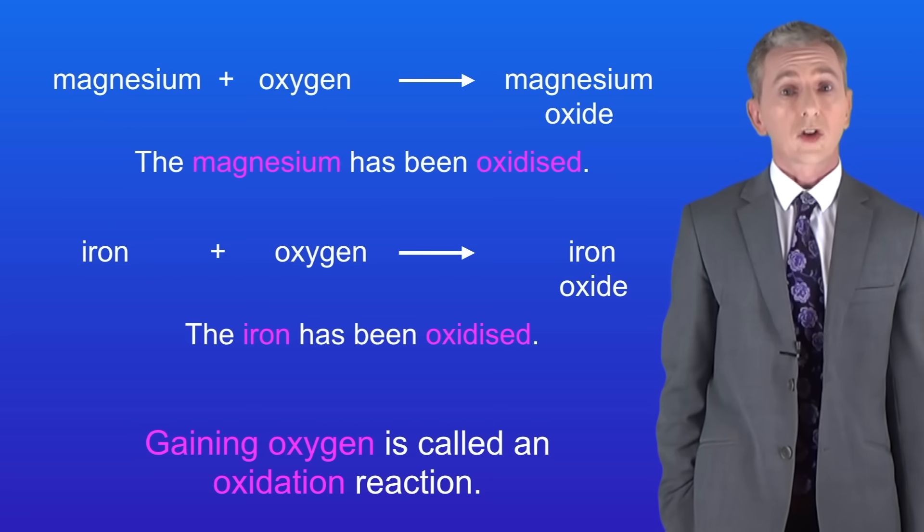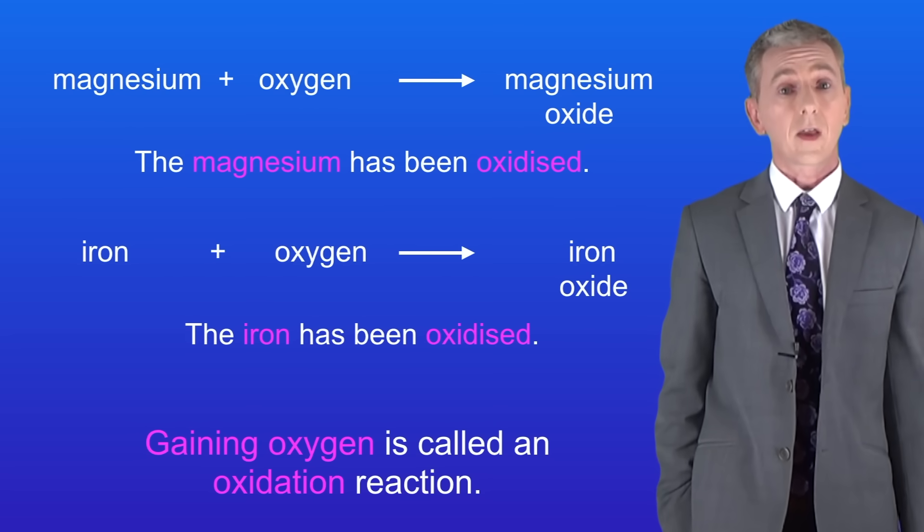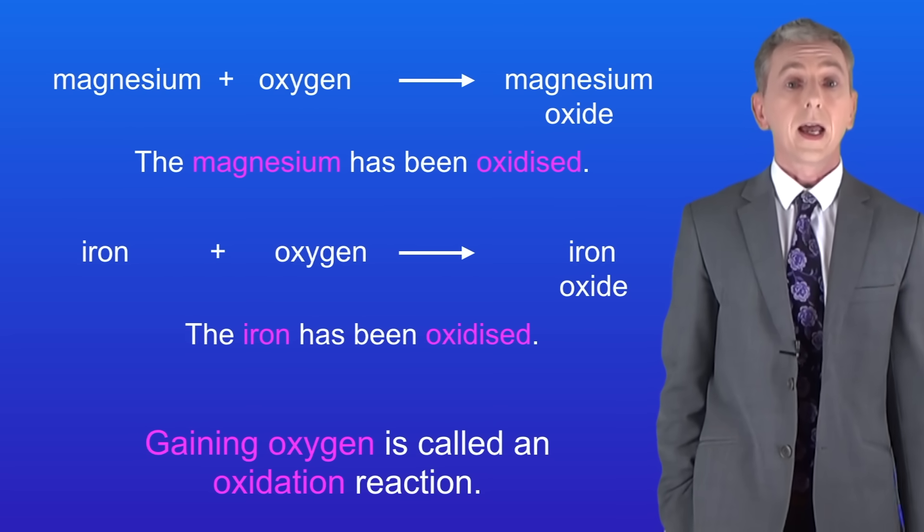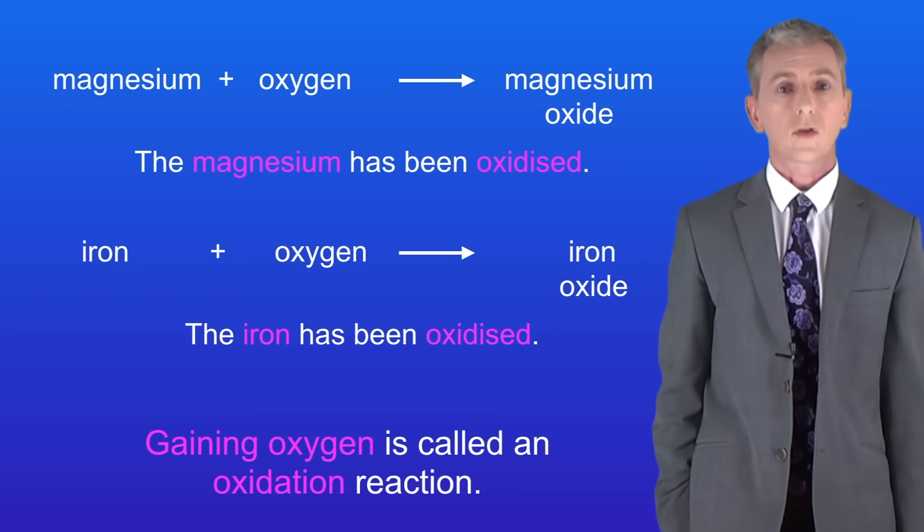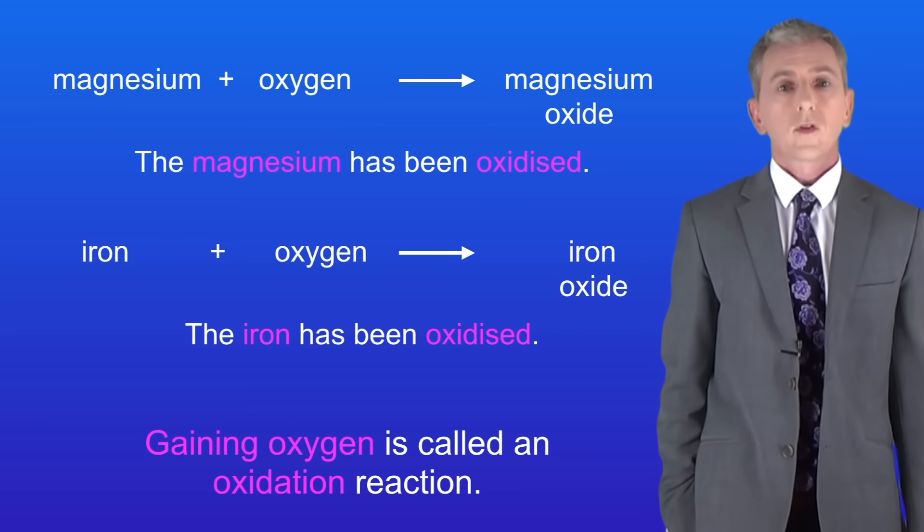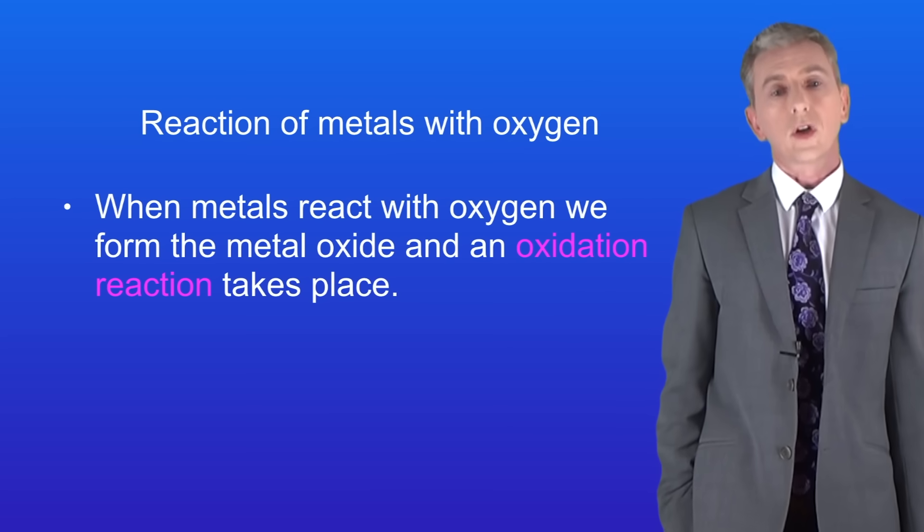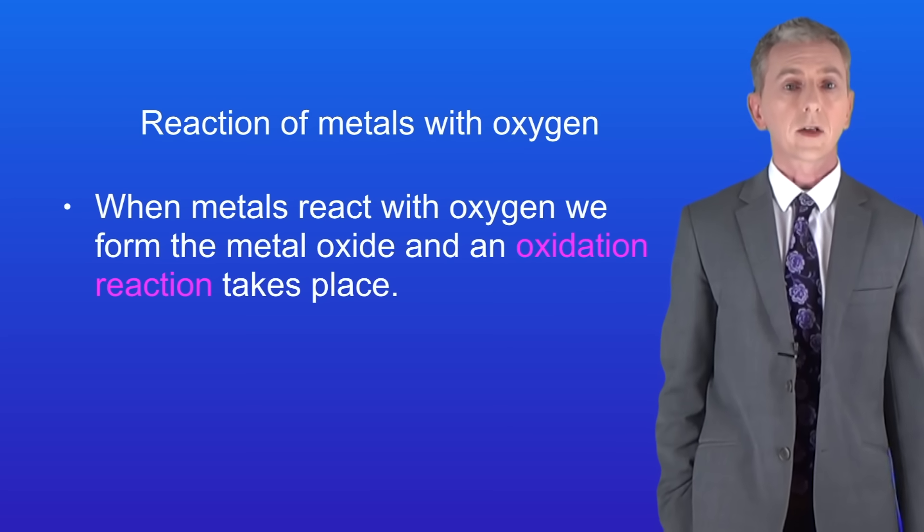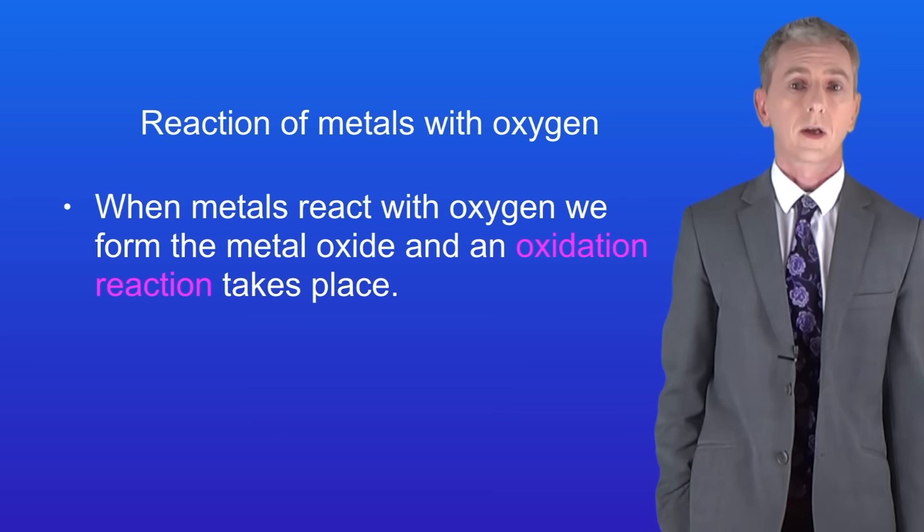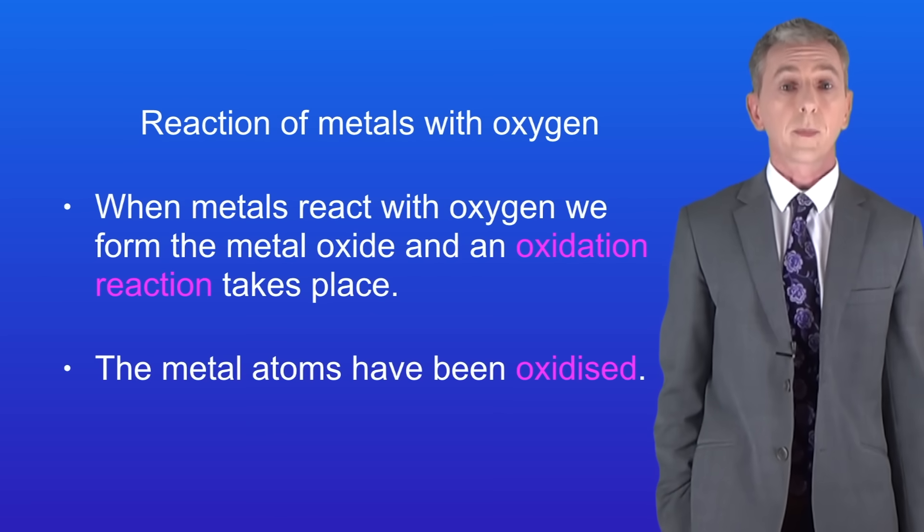And in the case of the reaction between iron and oxygen we can say that the iron has been oxidized, again because the iron has gained oxygen. So to recap when metals react with oxygen we form the metal oxide and an oxidation reaction takes place. We say that the metal atoms have been oxidized.